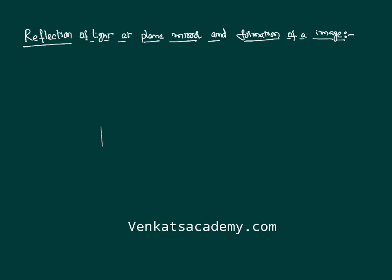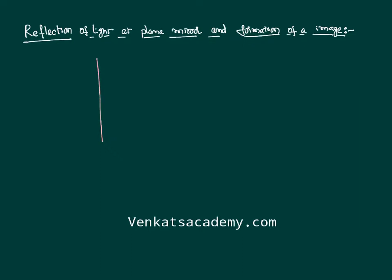A plane mirror is one where one surface is a reflecting surface, whereas the other surface is coated with paint, silver, or whatever, so that the reflection of light cannot go into the other side of that mirror. This is called a plane mirror.